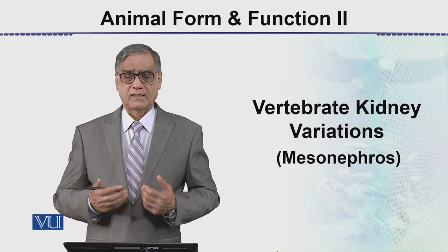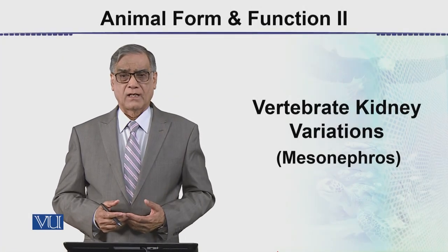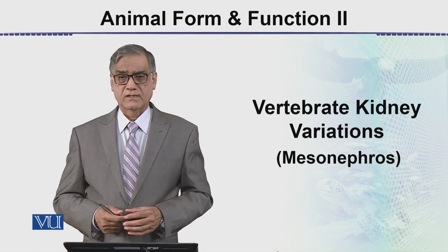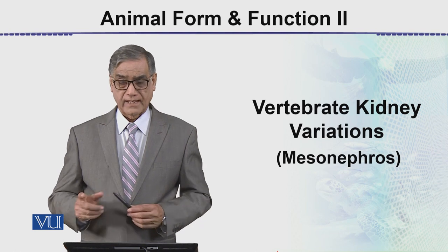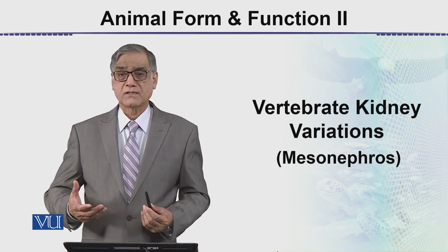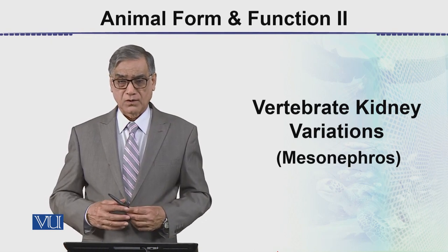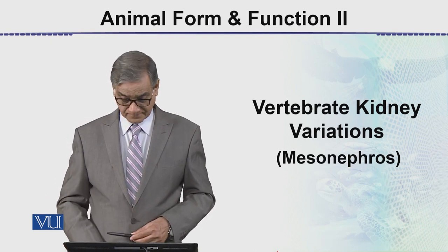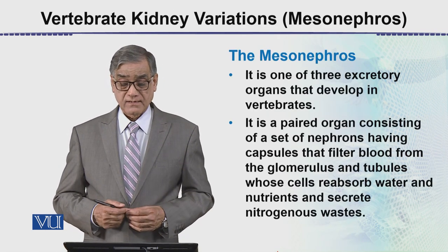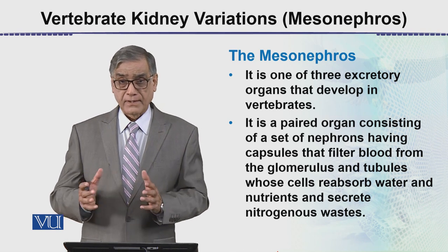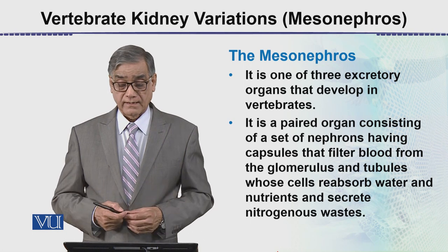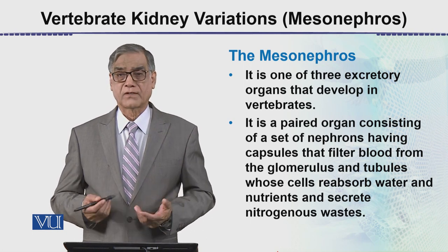In this module we will be studying the next form of the kidney, which is the mesonephros, under the heading vertebrate kidney variations. We are talking about variations which include the pronephros, mesonephros, and metanephros. The mesonephros is again a paired kidney — it is one of the three excretory organs that develop in vertebrates.